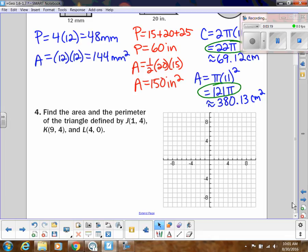So then let's look at one like this. This is more along the lines of our geometry. So we're linking the coordinate geometry with area. So first we would graph this triangle. J(1, 4), K(9, 4), and then L(4, 0).